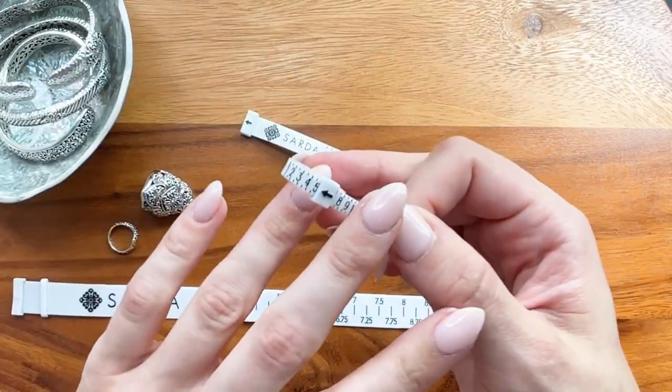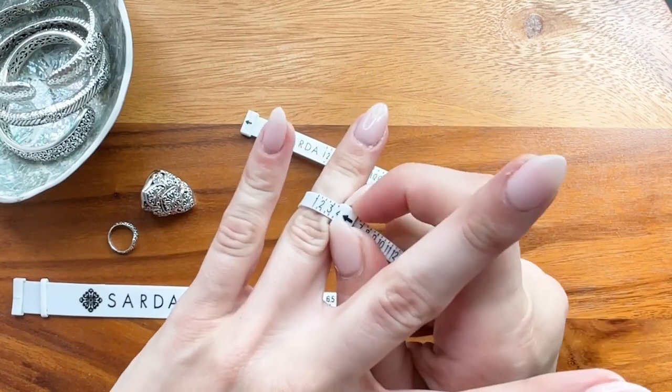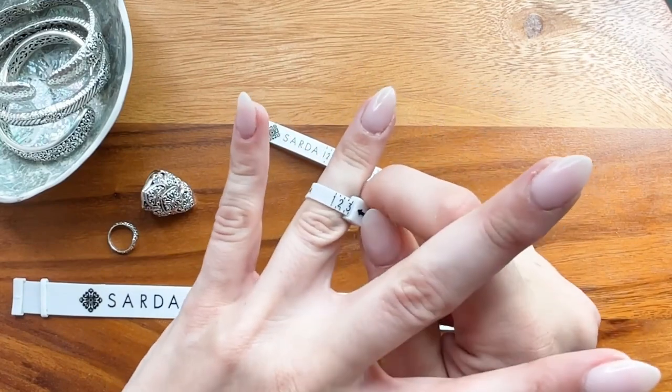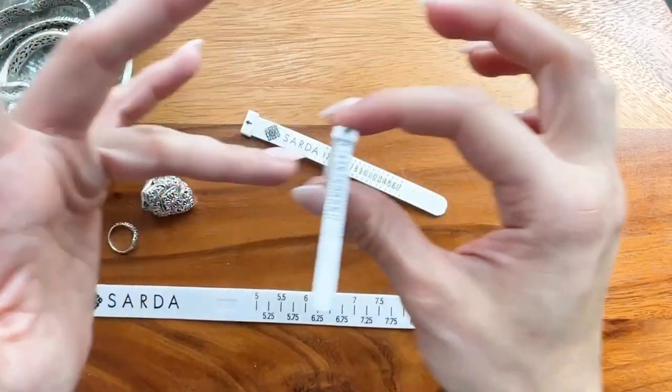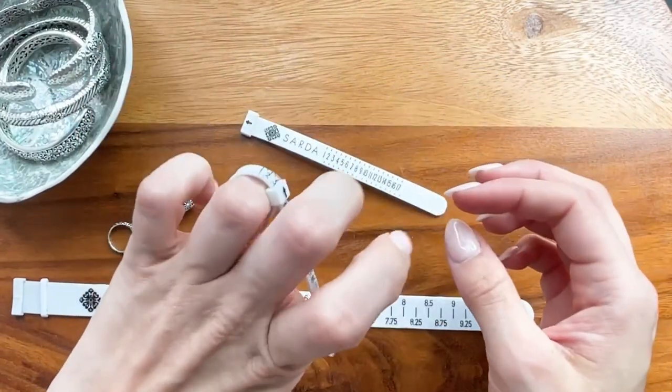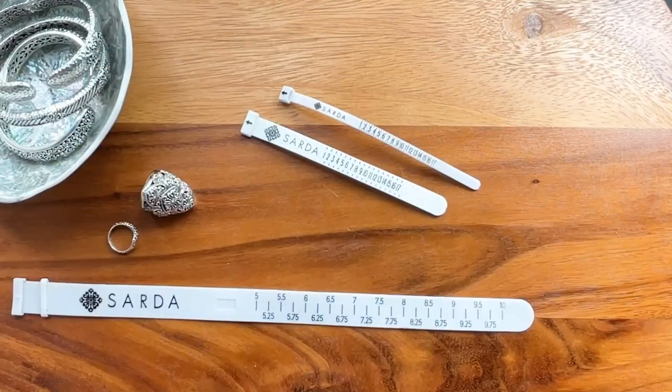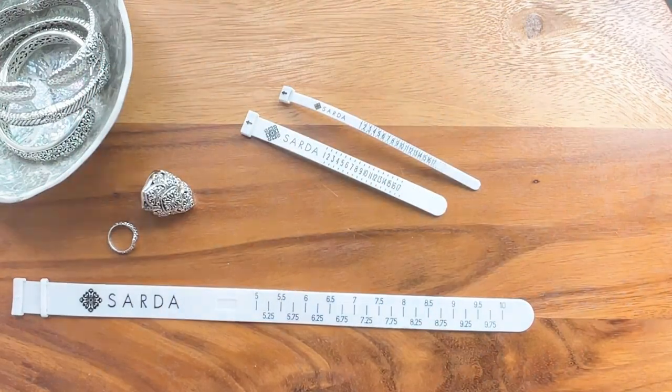Place on finger and pull to a snug yet comfortable fit. You will see my midi size on this finger is a 3. Thank you for following along to find your perfect Sarda ring fit.